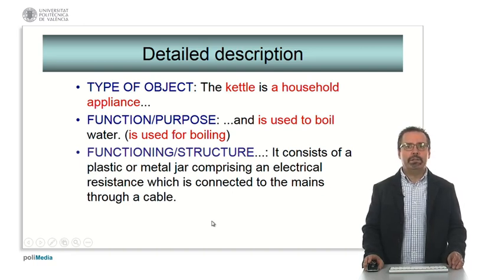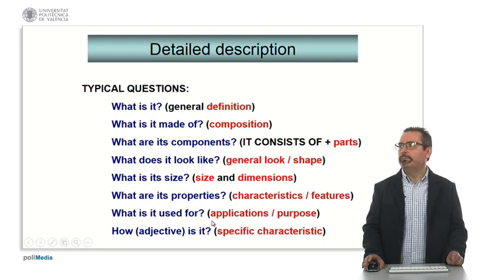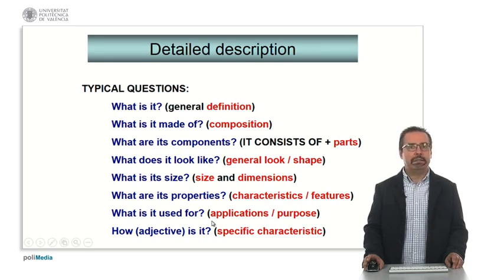Depending on the object you have to decide which aspects you want to deal with. These are the typical questions you ask yourself or other people in order to obtain a detailed description of an object. What it is, it gives the definition or description, general description. What it is made of, the composition. What are its components? What does it look like for general look or shape?